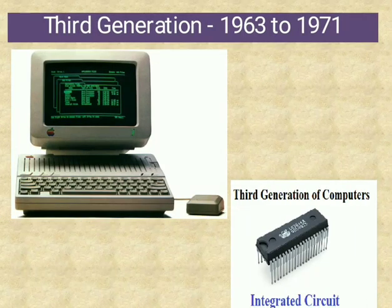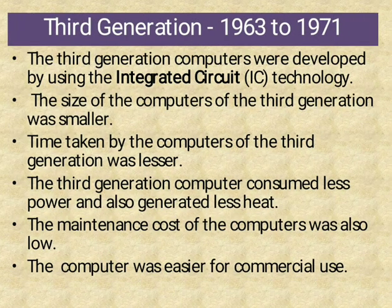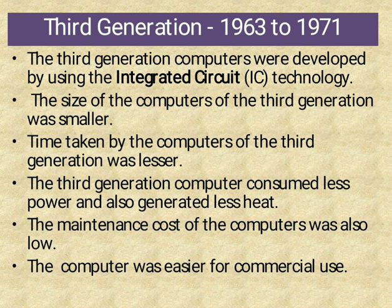3rd Generation of Computer, 1963–1971 — integrated circuits are used. The 3rd generation of computer used integrated circuit technology. The size of the computer was smaller, time taken by the computer was lesser, less power consumption and generated less heat. The maintenance cost of the computer was also low and the computer was easier to use for commercial purposes.